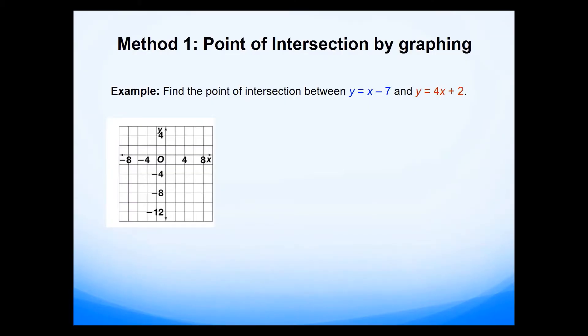We'll look at the first method, finding the point of intersection by graphing. So in this example it says find the point of intersection between the two lines: the first one is y equals x take away 7 and y is equal to 4x plus 2. What I would suggest is if you can pause the video and draw these two lines.